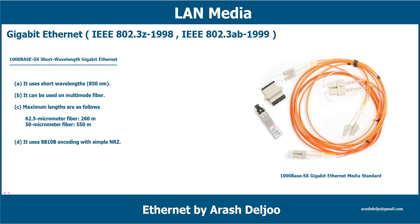1000Base-SX is a fiber optic gigabit ethernet standard for operation over multi-mode fiber using 850 nanometers of wavelength. The standard specifies a distance capability between 200–220 meters and 550 meters. In practice, with good quality fiber optics and terminators, it will usually work over significantly longer distances. This standard is highly popular for intra-building links in large office buildings, collocation facilities, and carrier-neutral internet exchanges.